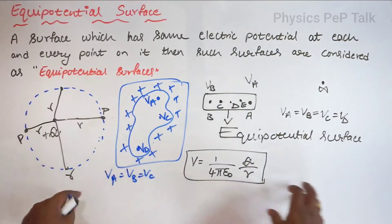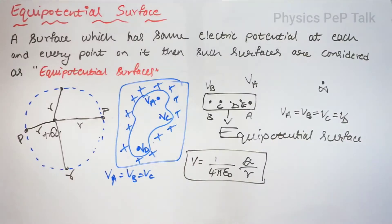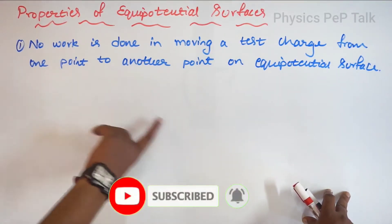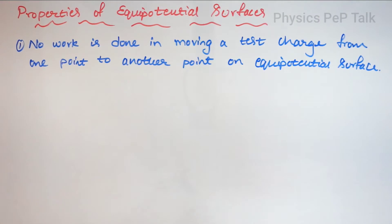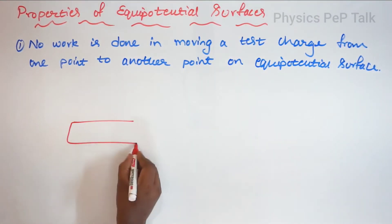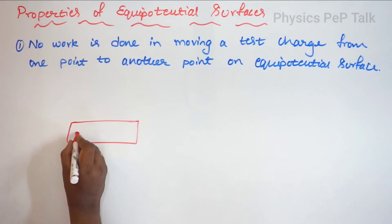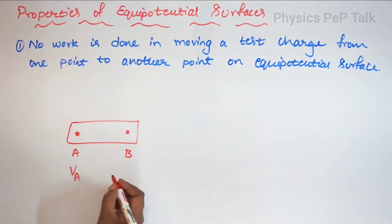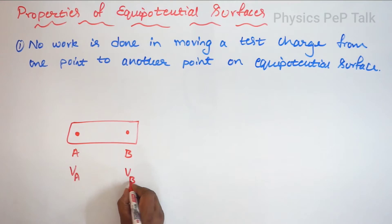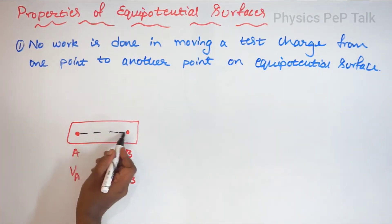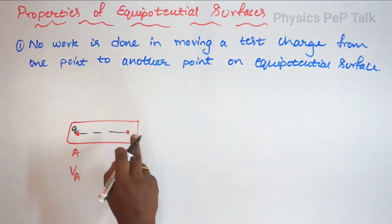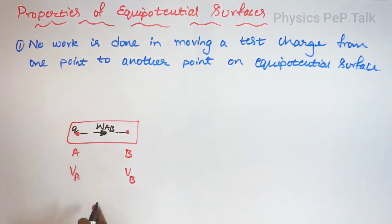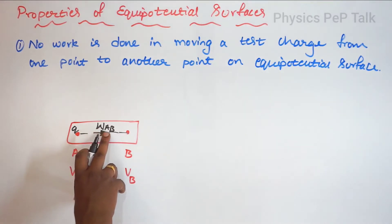Let us see some of the basic properties of equipotential surfaces. The first basic property is: no work is done in moving a test charge from one point to another point on an equipotential surface. Consider an equipotential surface with points A and B. At point A, electric potential is V of A; at point B, electric potential is V of B. I will move a charge from point A to point B. The work done in this process is W of AB.